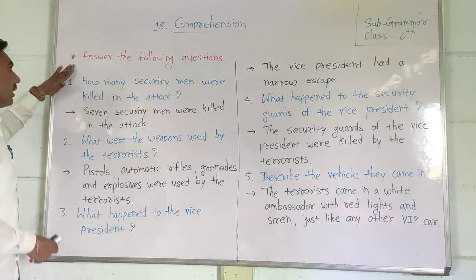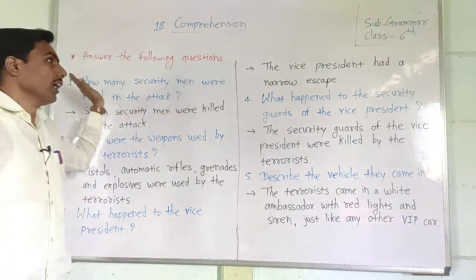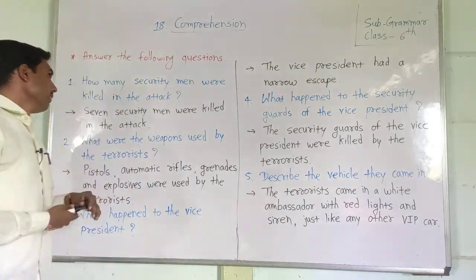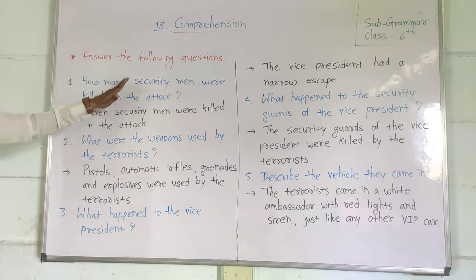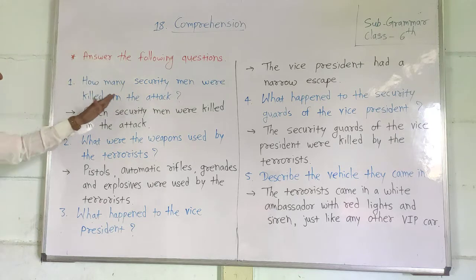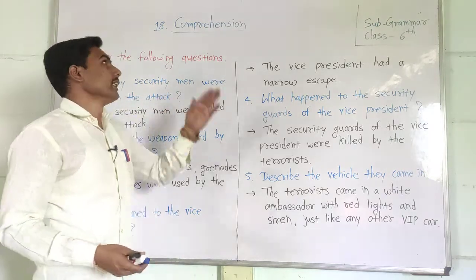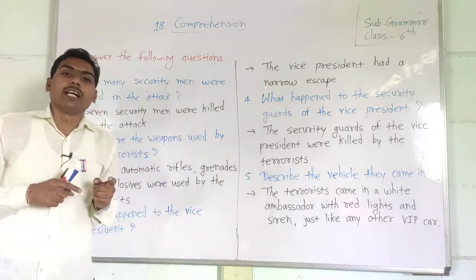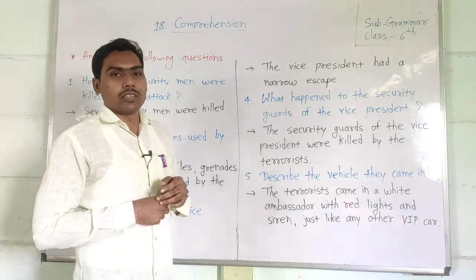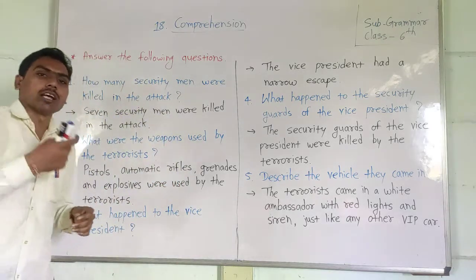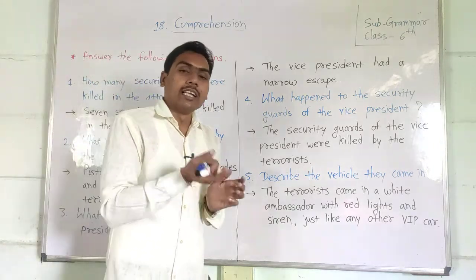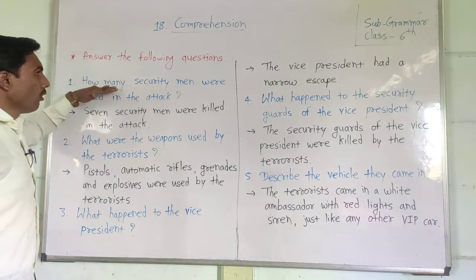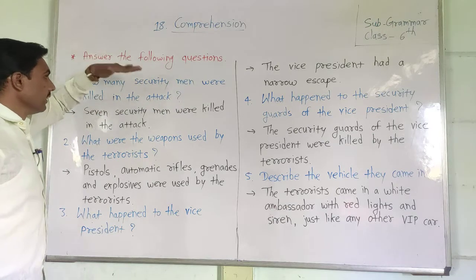Let's start. The first question is: answer the following questions. The first question is here — how many security men were killed in the attack? In Chapter Number 18, Comprehension, there is a first passage about an attack on a special building. The question is: how many security men were killed in the attack?